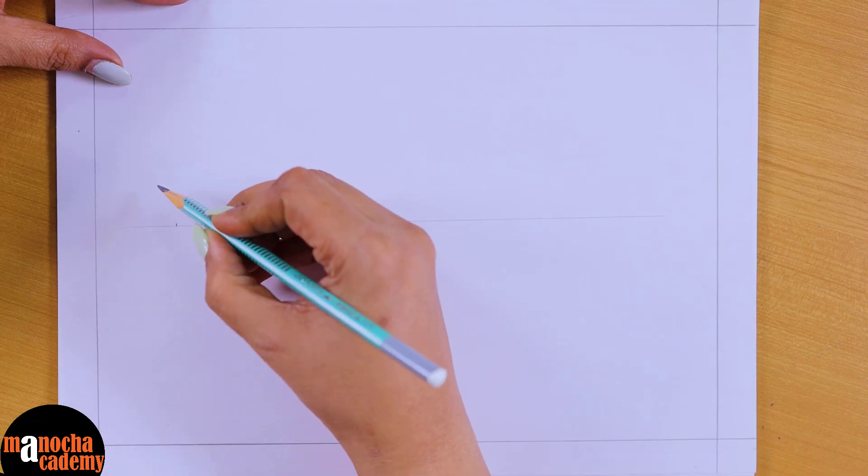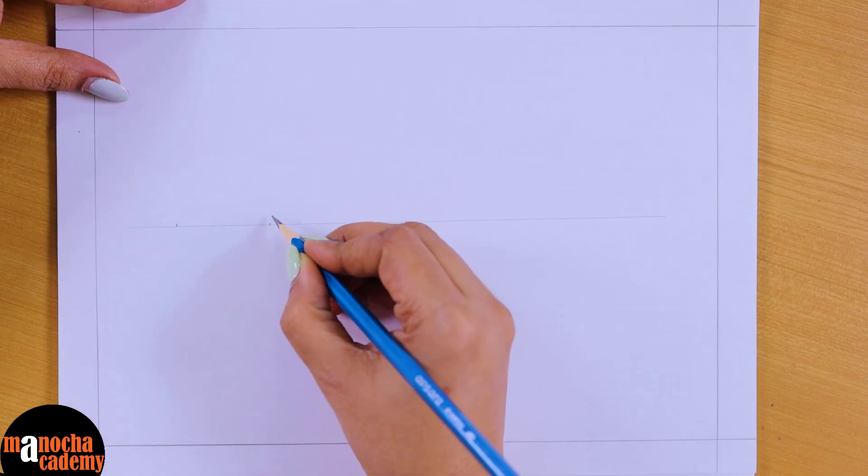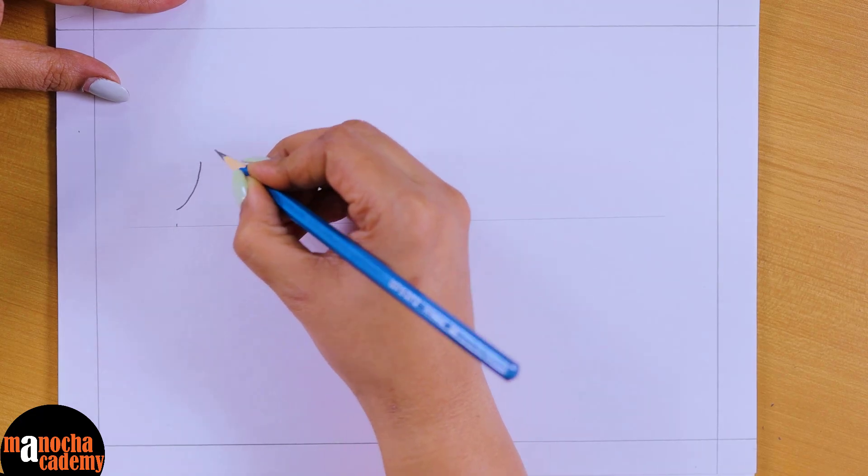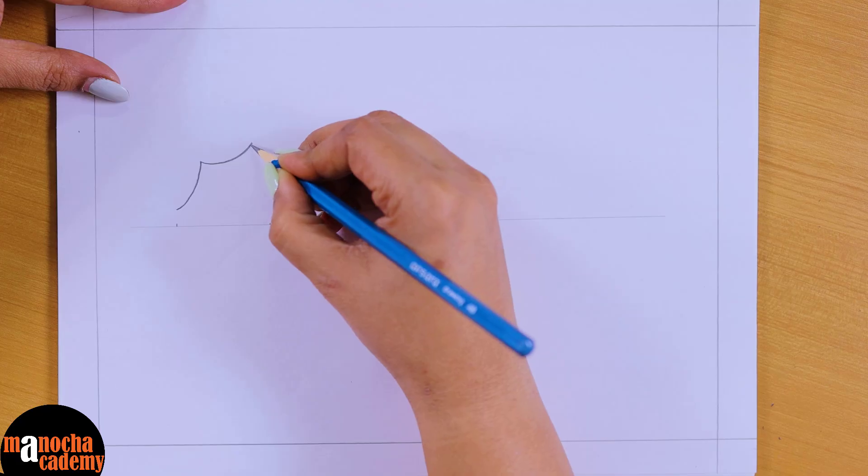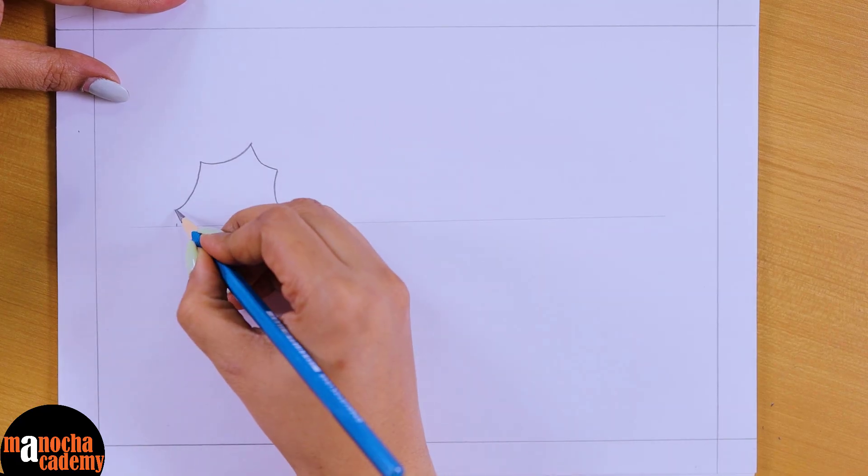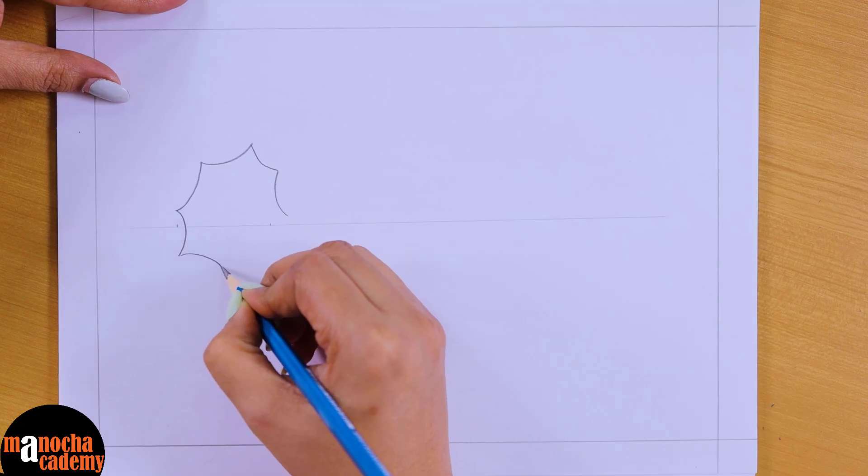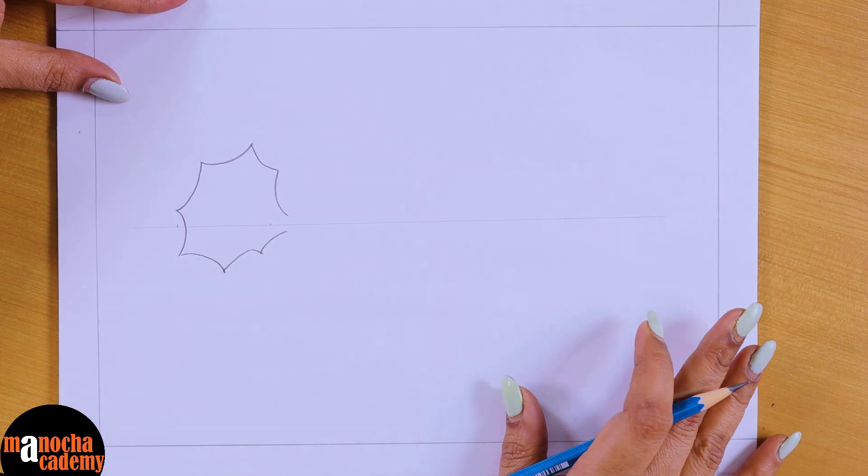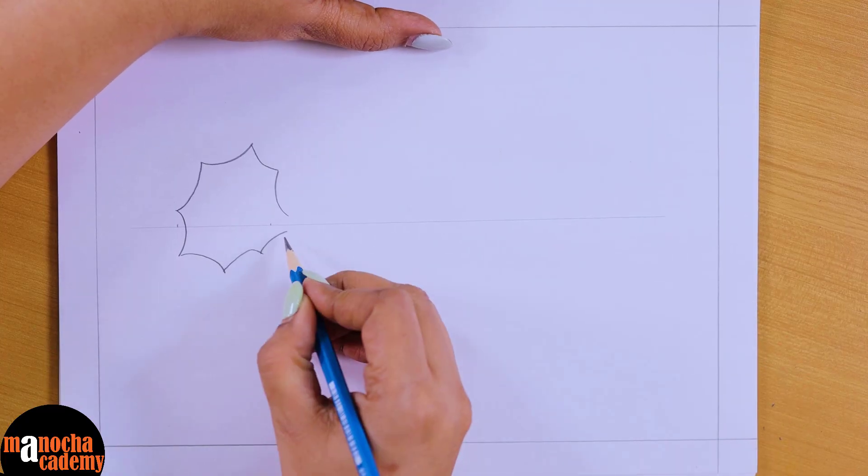So I will first start by drawing the cell, that is the cytone. For cytone you have to remember that this is a star-shaped structure. We'll draw a star-shaped structure. You can take whatever shape of this star that you want to take. All that you have to remember while drawing this is that this has to come and meet somewhere here.